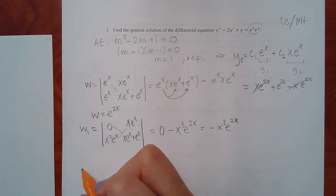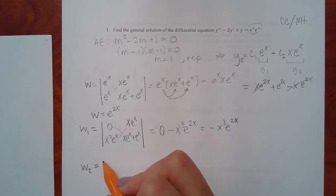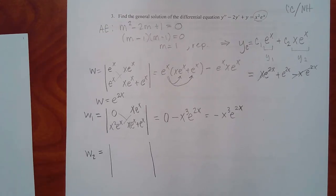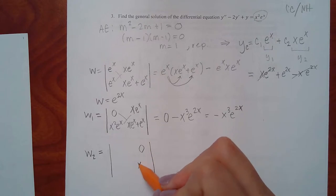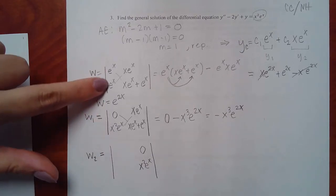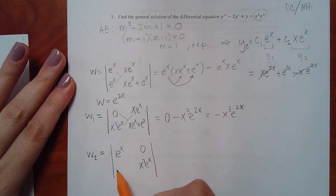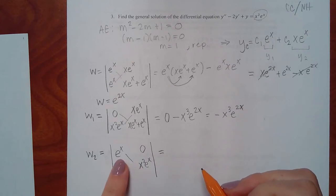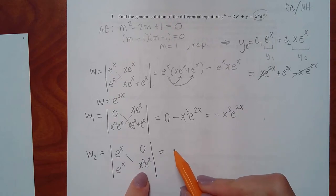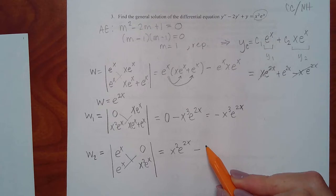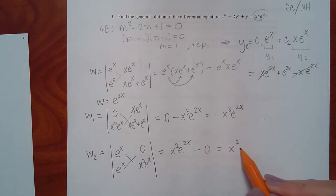For W2, the zero and f(x) go in the second column, with the original first column staying. Doing the determinant — multiply, get x squared times e to the 2x, minus zero — so W2 is just x squared·e to the 2x. This is looking nicer because when we form the fractions, those e to the 2x terms will cancel.